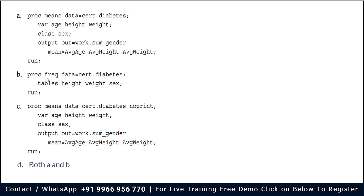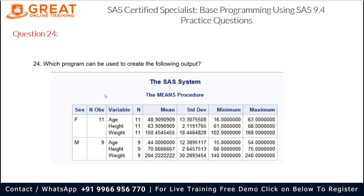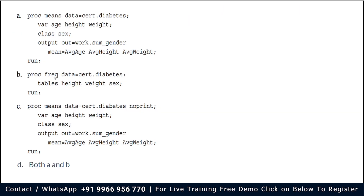The second option is PROC FREQ — that is wrong. When we see the output it is clearly the MEANS procedure, so it does not belong to PROC FREQ and we can easily say that option is wrong. The third option is PROC MEANS DATA=cert.diabetes with VAR age height weight; CLASS sex; OUTPUT OUT=work.sum_gender MEAN=average_age average_height average_weight; RUN.